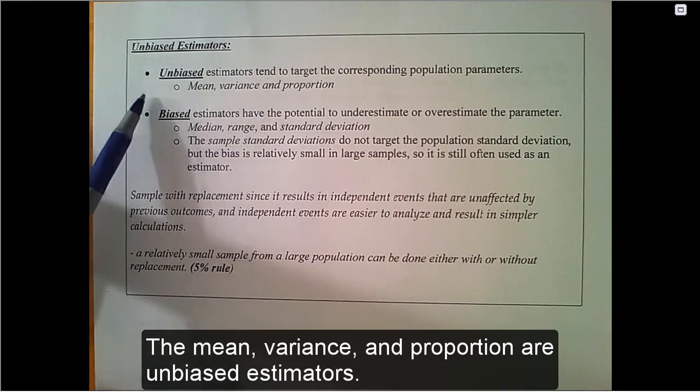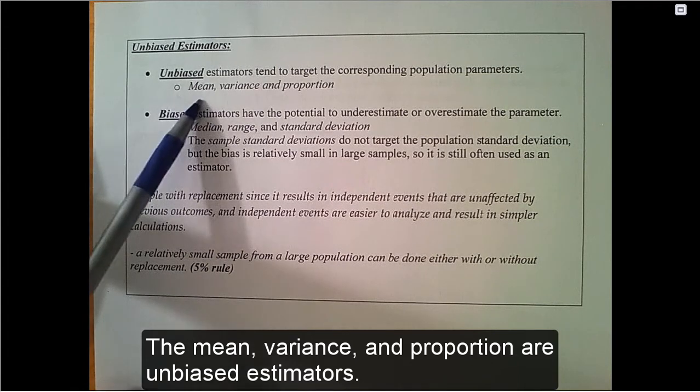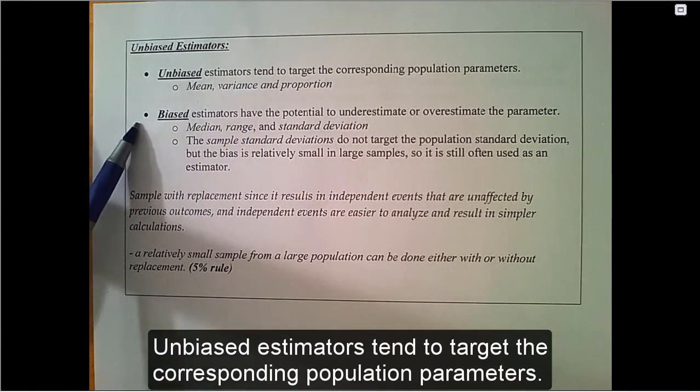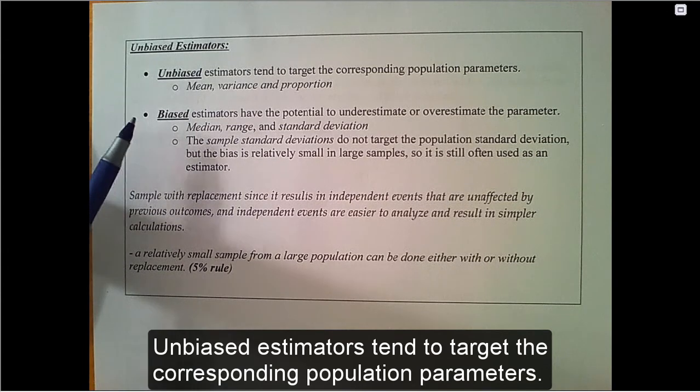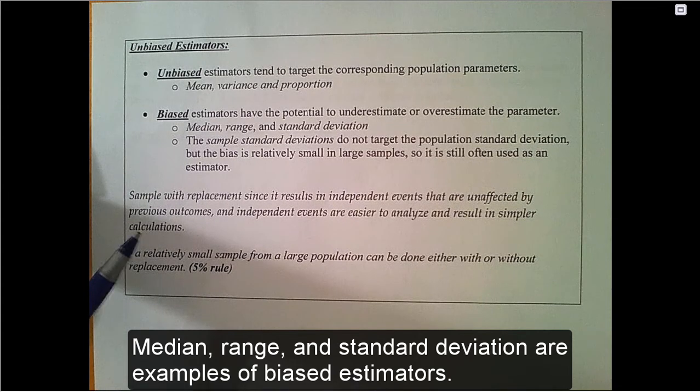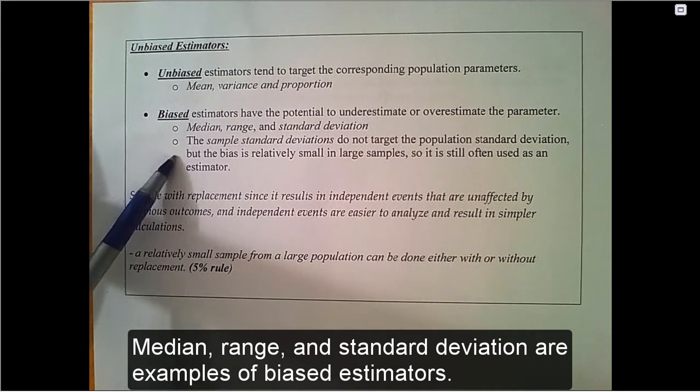The mean, variance, and proportion are unbiased estimators. Unbiased estimators tend to target the corresponding population parameters. Median, range, and standard deviation are examples of biased estimators.